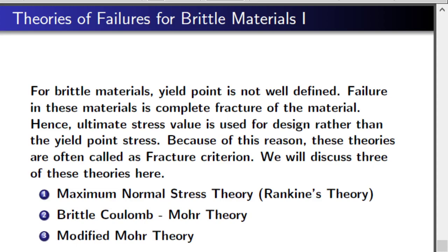Now we will study the theories of failure for brittle materials. These theories of failure are also known as fracture criteria because, unlike ductile materials, we don't have a well-defined yield point. We use ultimate tensile stress or ultimate compressive stress as a limiting value. Failure here basically means complete fracture or rupture into two or more parts. We use three theories: maximum normal stress theory (Rankine's theory), brittle Coulomb-Mohr theory, and modified Mohr theory.